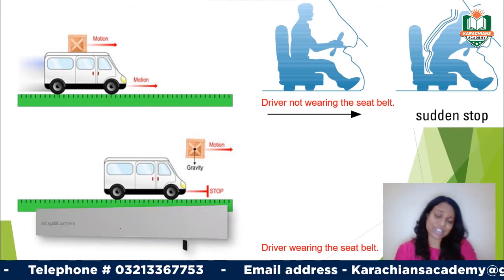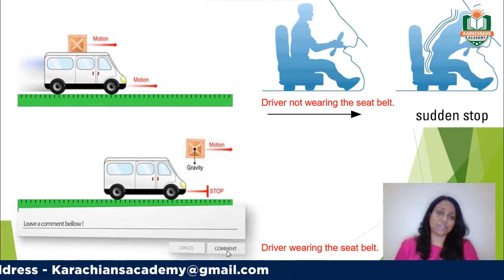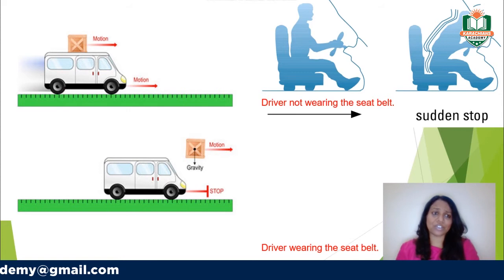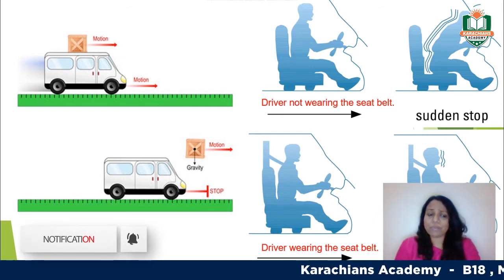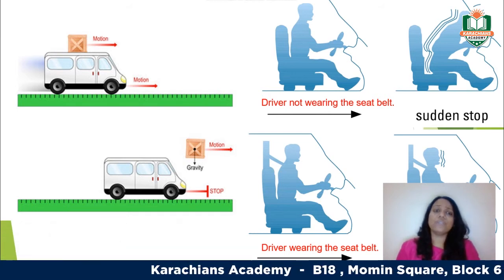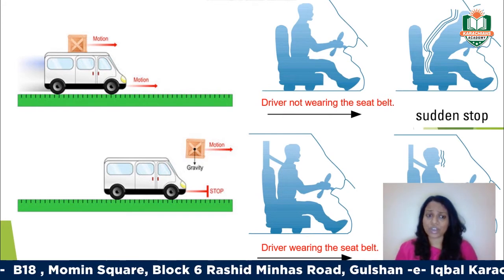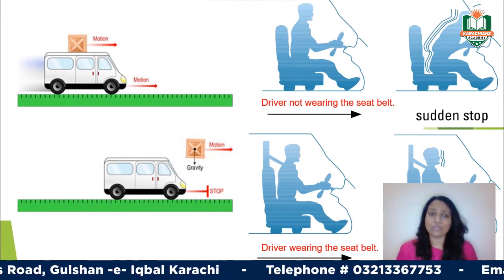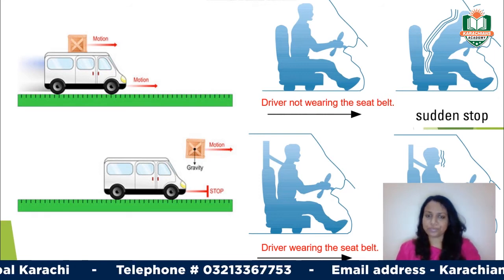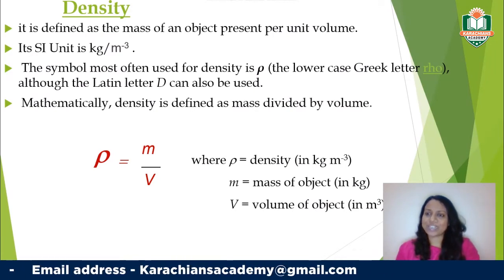Wearing a seat belt is a very good safety precaution while driving. If the driver is not wearing a seat belt and the car stops suddenly, the person will move forward, hit their head on the glass and injure themselves. But if a person is wearing a seat belt, they jerk forward and are pulled back. This movement forward when stopping suddenly is because of inertia — your body was moving with the car and did not want to stop. The seat belt is the security precaution to prevent injury.